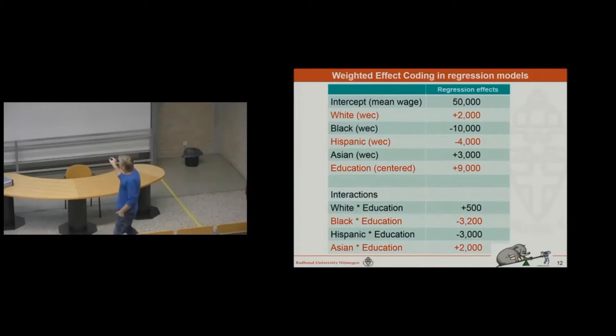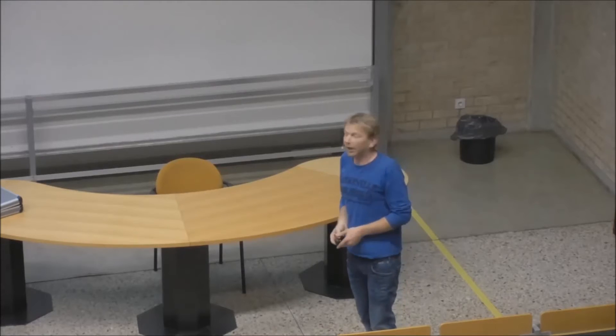If you include weighted effect coding interactions, the other numbers you got previous, so the previous model, before you entered the interaction effects, they'll be exactly the same. And now I think for students it's more easy to understand what is going on. Because these effects over here are just the extras. You have nine grand as an educational effect, and if you are white, what is the extra? And the extra effect is $500. And here we see that the black and the Hispanic population, they are worse off. The average effect is $9,000, and they are $3,200 and $3,000 below that average educational effect. So I think that is one of the major advantages of weighted effect coding interaction. It has a clear didactical advantage. I can explain more easily what interaction is.